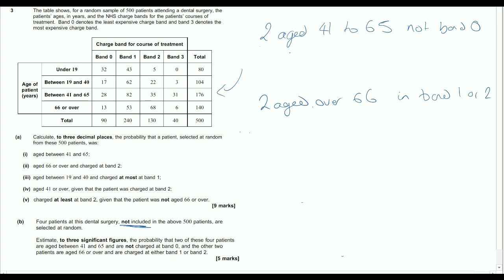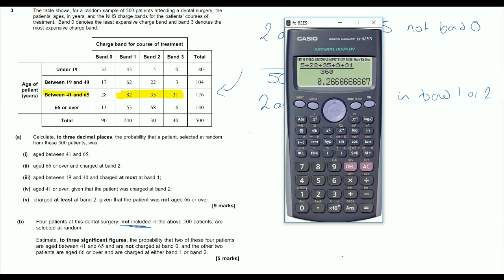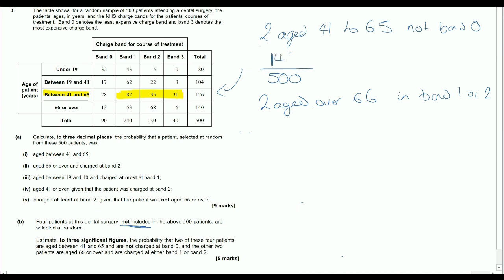So the two people aged, the first situation, in the category of 41 to 65, but not in band zero. So we're looking at these three here. So out of our 500 people, we're after the probability that they are in this situation here. So just very quickly adding those numbers together. We've got the 82, the 35, and the 31. So we've got 148, so the probability that, and that's for one person. So it's that for the first one, and the second one, 148 over 500 again.